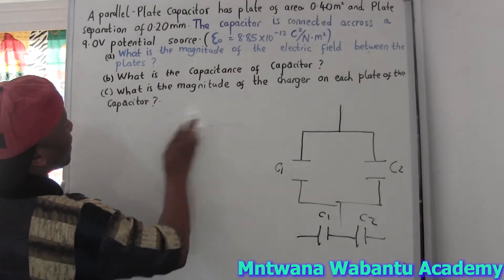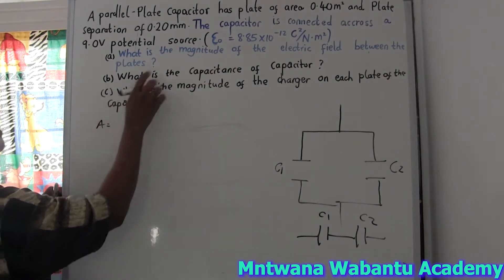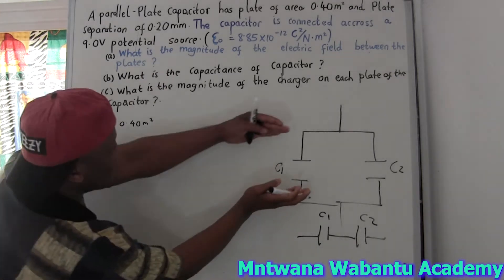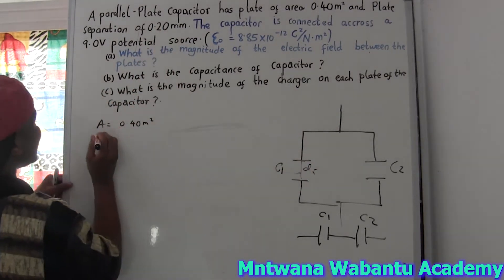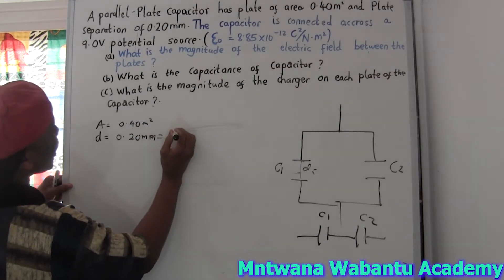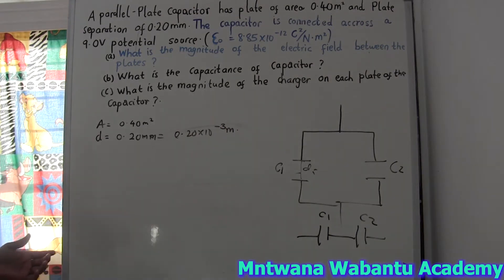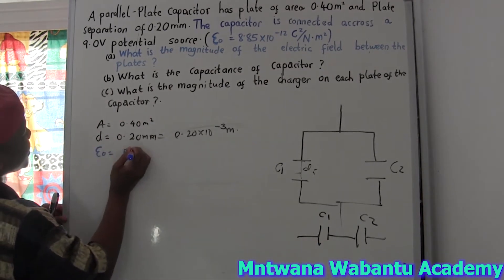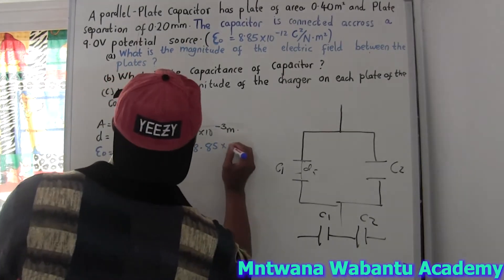So the parallel plate capacitor has a cross-section area of 0.40 meters squared. And the plate separation — the distance of separation between the plates — is 0.2 millimeters, so we have to convert this to meters by multiplying by 10 to the power negative three meters. We are also given permittivity, which is always a constant.